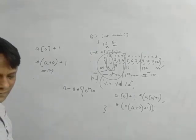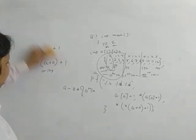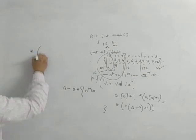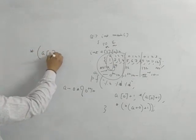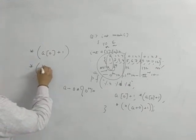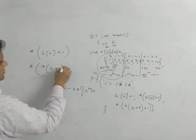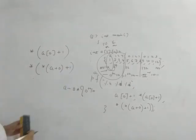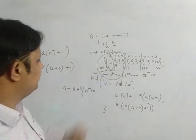Right. Now second question. Star a 0 plus 1. Star a 0 plus 1. How will you solve this? It is star star a plus 0 plus 1. Right. So a plus 0 means base address of your 0th 1D.